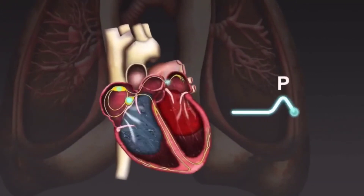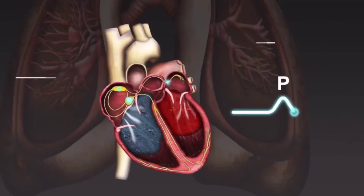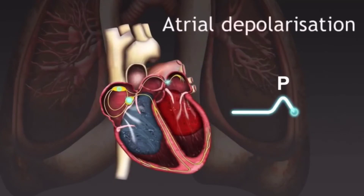The P wave is produced as the electrical impulse travels through the atria, causing them to contract. The P wave corresponds to atrial depolarization.